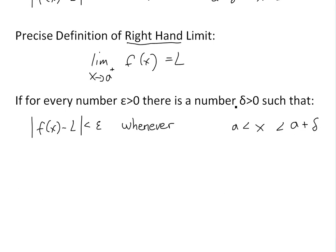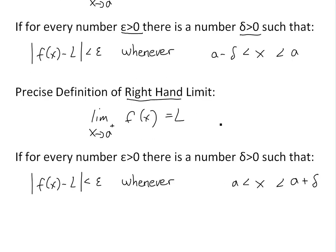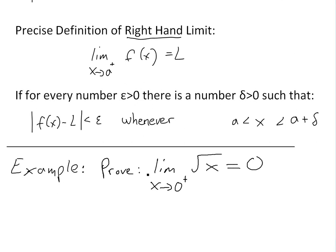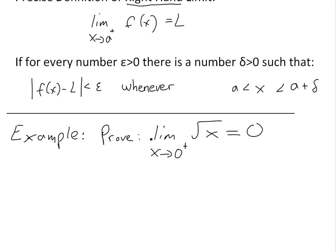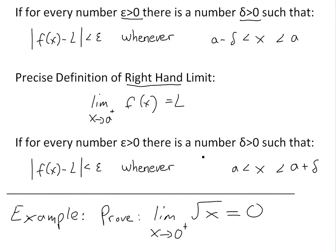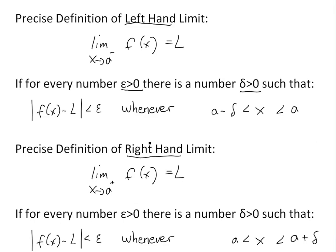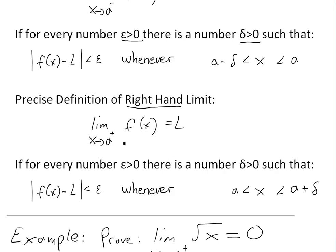You can see my earlier video linked below for more information on this. Now, the example I'm going to go over says: prove that the limit as x approaches zero from the right side of square root of x equals zero. To prove it, we'll use the right-hand limit definition, because we're dealing with a plus here.